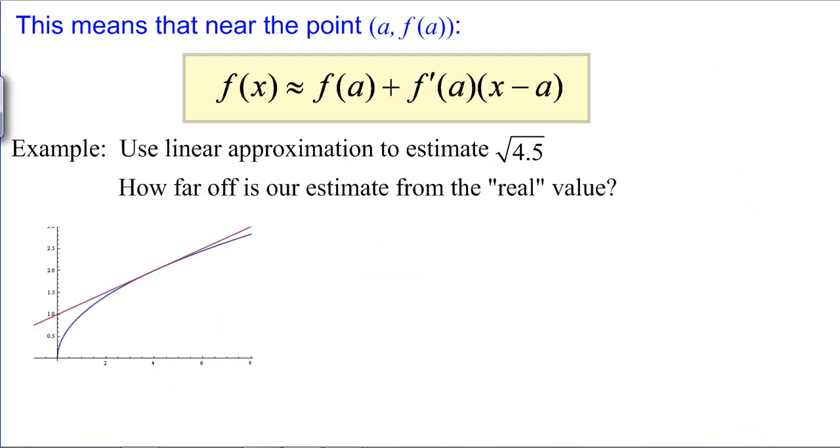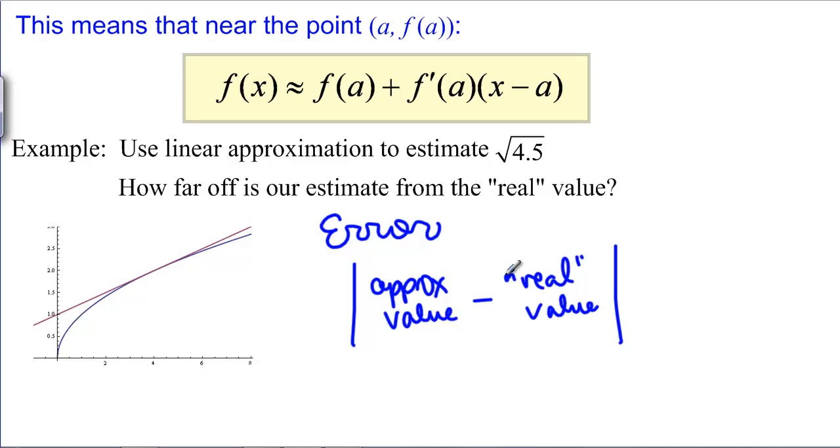What if we wanted to know how far off our estimate was from the real thing? We can calculate what we would call the error by looking at the difference between what we get and what we're supposed to get. We can say that our approximate value minus the real value and then we don't really care if that's a positive or negative number so we're going to take absolute values of that. Notice that I put real in quotations. If we're really doing this, we don't have any way of getting the real value. In the make-believe calculus world, right now we can take the real value, at least a better estimate of the value to be what the calculator gives us.